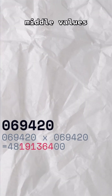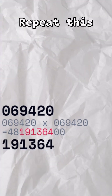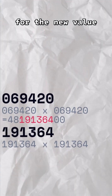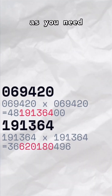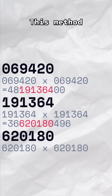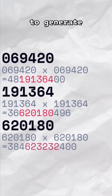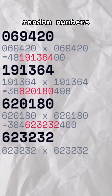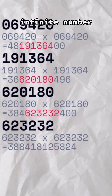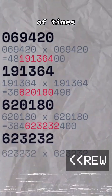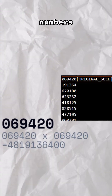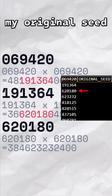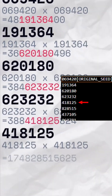Take a number, multiply it by itself, and get the middle values. Repeat this for the new value as many times as you need. This method allows you to generate seemingly random numbers an infinite number of times, and you would get the same exact numbers every time from your original seed.